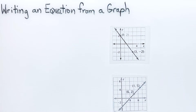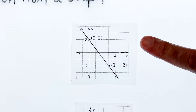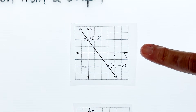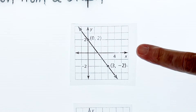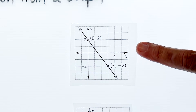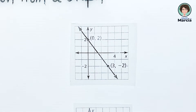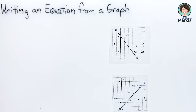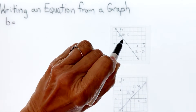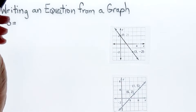This lesson is writing an equation from a graph. If you notice the first graph is going downhill, so I know the slope is going to be negative. When writing an equation from a graph, the first thing we do is locate our y-intercept. I can see from this graph that b equals 2.